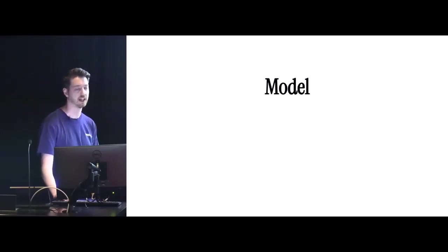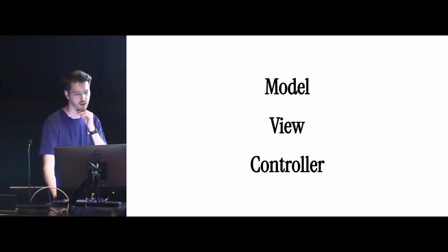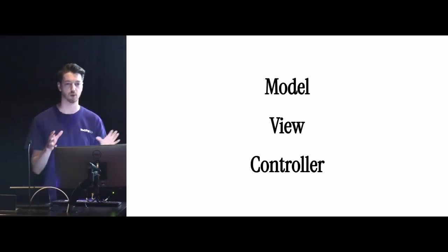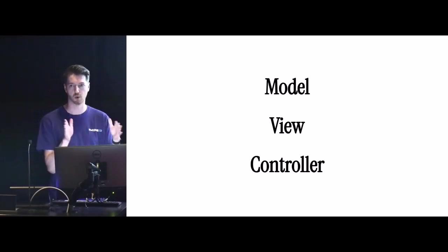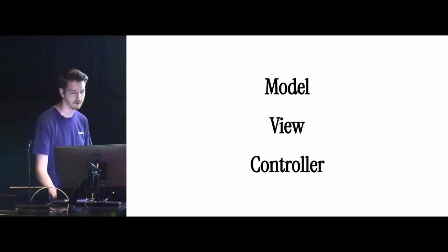So what does MVC specifically mean? If you haven't guessed it yet, it's an acronym. The M stands for Model, V stands for View, and C stands for Controller. We'll look at each of these now in a bit more detail. I'm not going to spend too much time on the more traditional usage of these components, but I'm going to focus on how we use MVC in WordPress development and show some practical code examples as well.